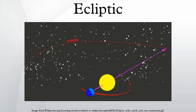It also refers to the plane of this path, which is coplanar with both the orbit of the Earth around the Sun and the apparent orbit of the Sun around the Earth.